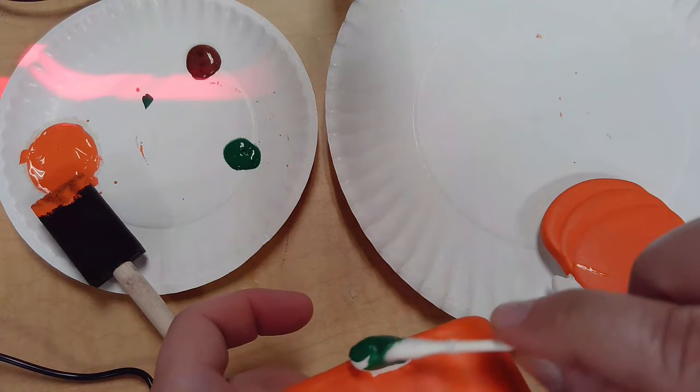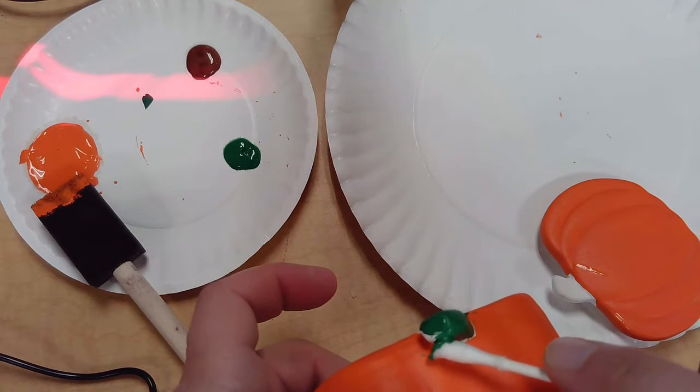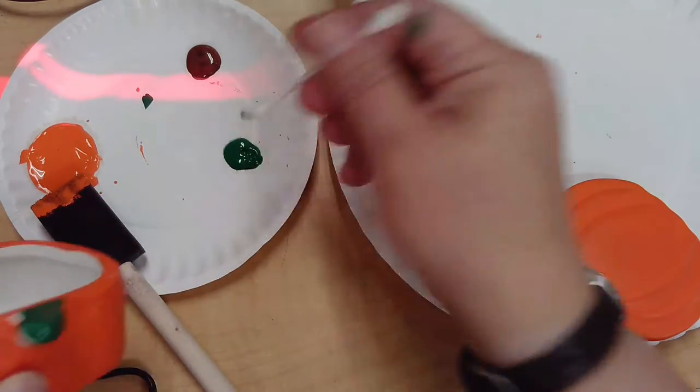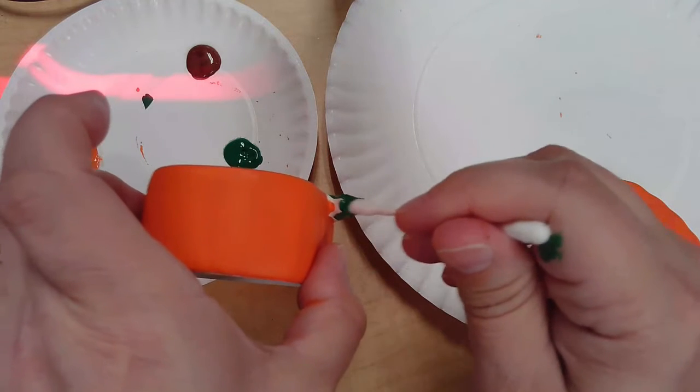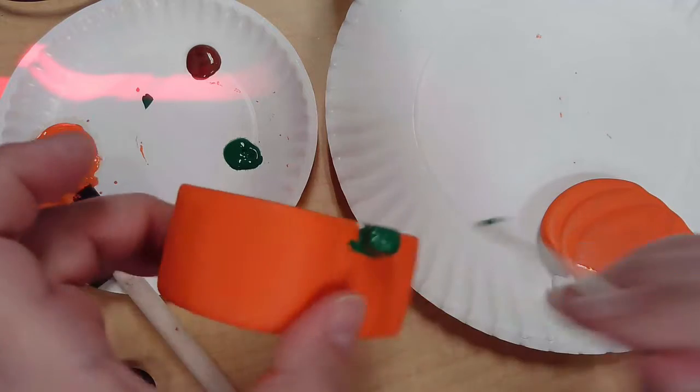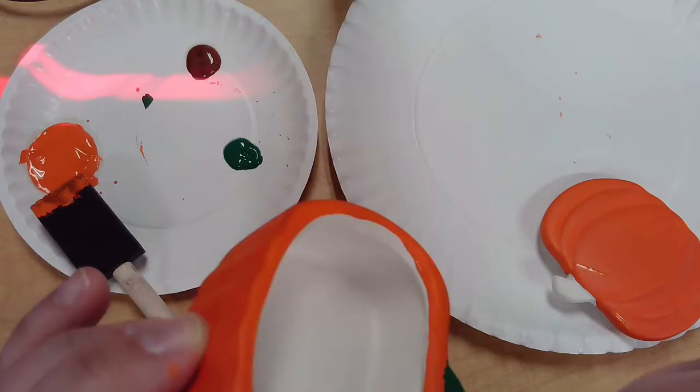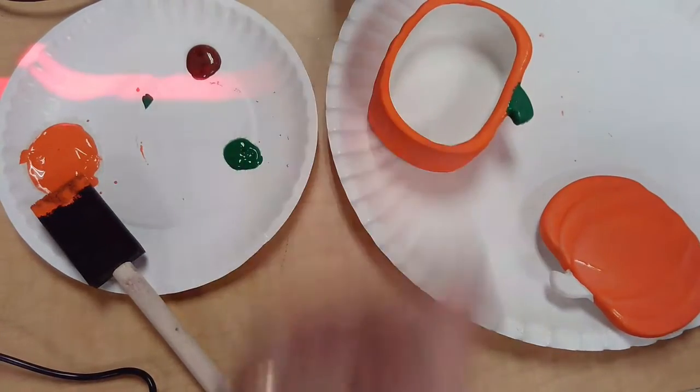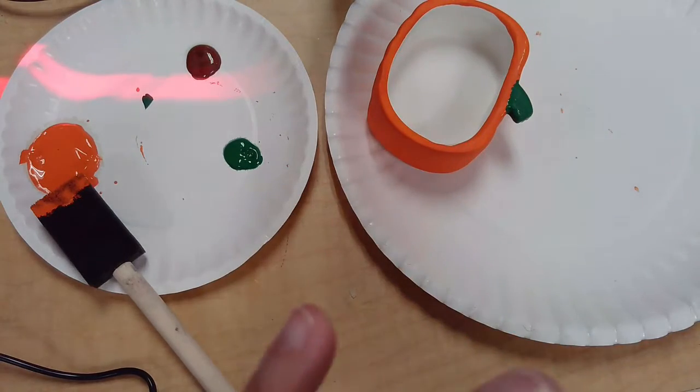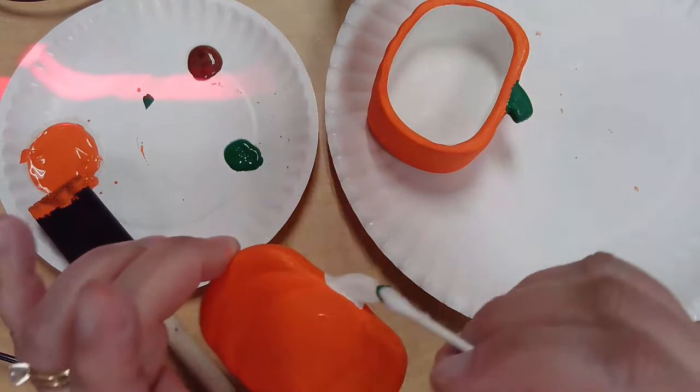If you need to, you can kind of squish your q-tips, your cotton swabs end to make it a little flatter to get the edges a little bit better. And if you get any paint on the orange part, you can always go back and touch that up later. You can see my lid's almost already dry. I'm able to pick it up without getting any orange all over my fingers.